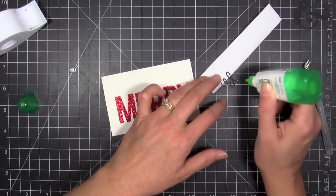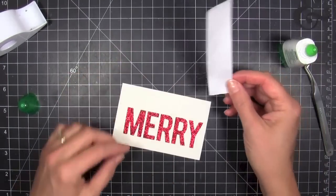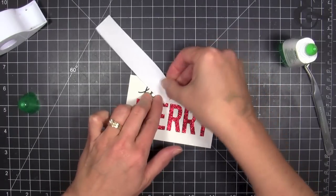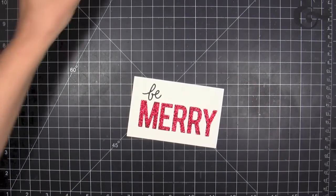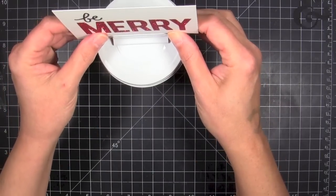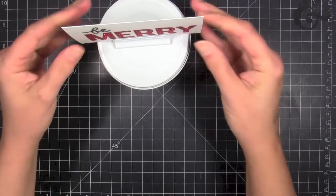I'm taking that little word 'Be' and getting some Mono adhesive, that Mono Multi glue, and just putting little droplets on the back because it's such a fine detail cut. I'm mounting that into place, and then I'm ready to slip it in. That's why I needed to allow a little bit of gap along the bottom of that piece.